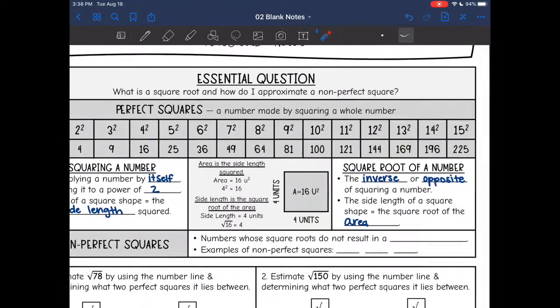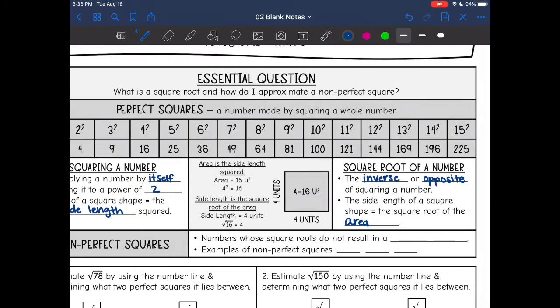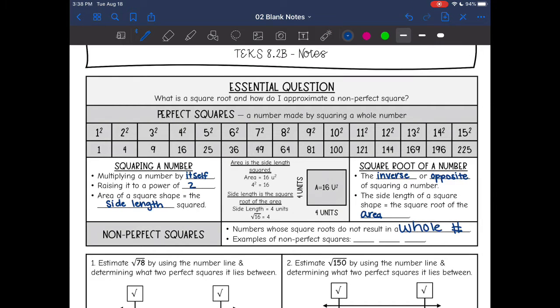Non-perfect squares are numbers whose square roots do not result in a whole number. Examples of non-perfect squares are anything except for these numbers up here. So a non-perfect square, something between 9 and 16 would work, like square root of 15. Anything that is not up here would work for a non-perfect square, maybe square root of 200 because I don't see that up here, and then square root of a decimal would work too.